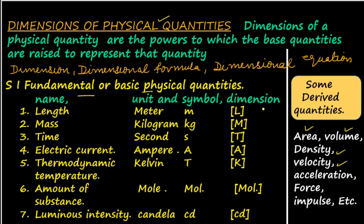What does the definition say? Dimensions of a physical quantity are the powers to which the base quantities are raised to represent that quantity. When we represented these basic quantities, we assumed there is only one dimension. So for the case of length, it is L raised to 1, which is simply L.